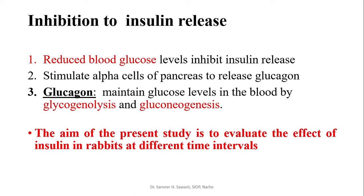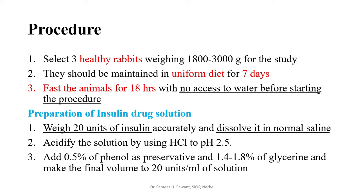Inhibition of insulin release stimulates alpha cells of the pancreas to release glucagon. Glucagon plays an important role in maintaining glucose level in the body by glycogenolysis and gluconeogenesis. The aim of this study is to evaluate the effect of insulin in rabbit at different time intervals.